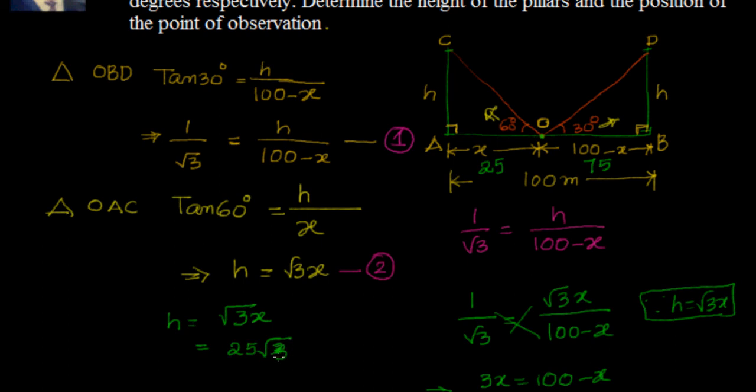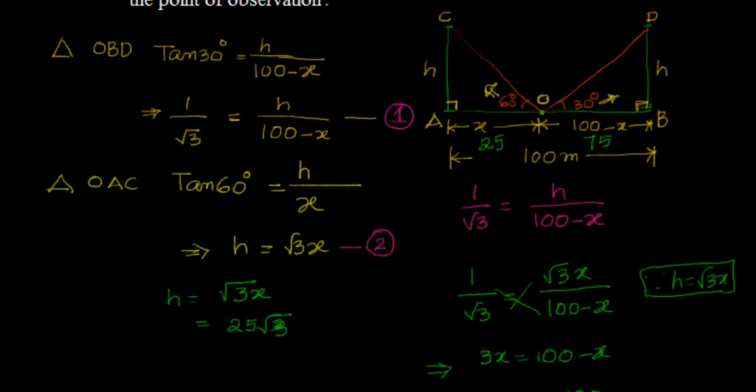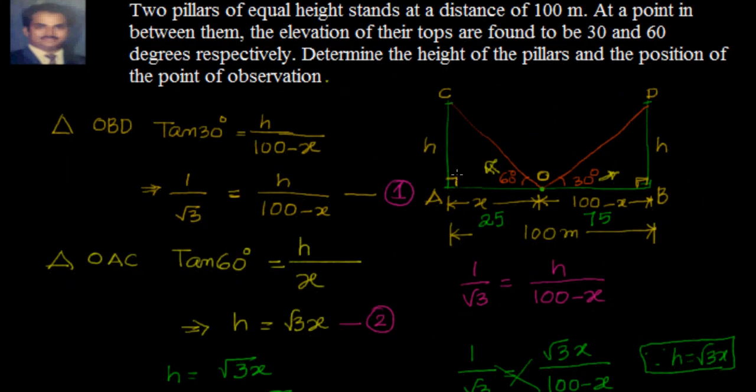That's a very simple example. You can see where we have leveraged trigonometric functions to find out the height of the tower and also the point of observation. We will do some more problems with respect to height and distances in the coming videos. Thank you. Bye for now.